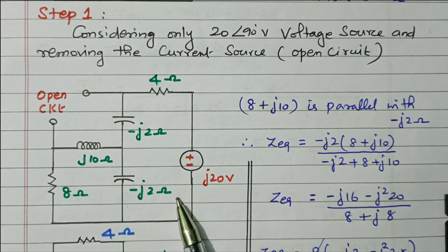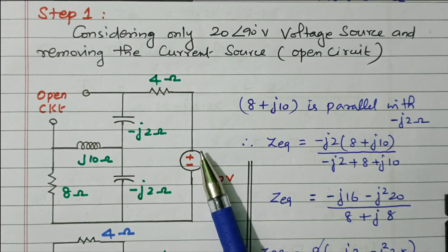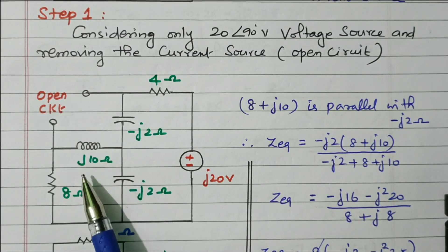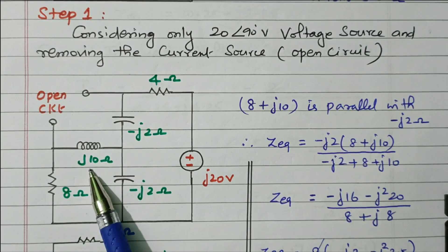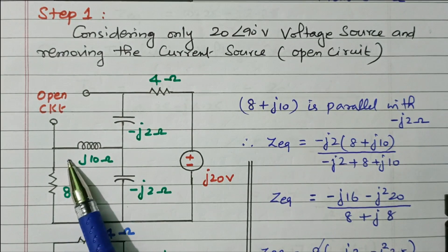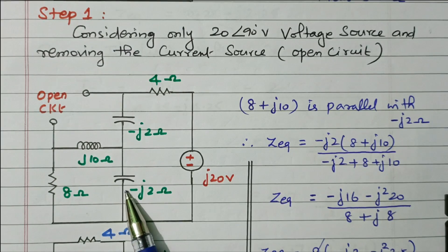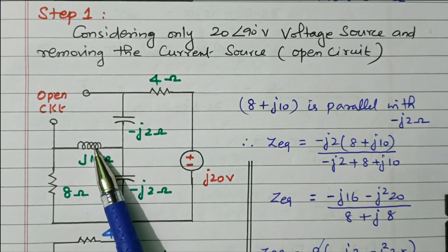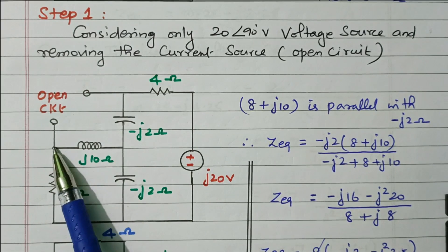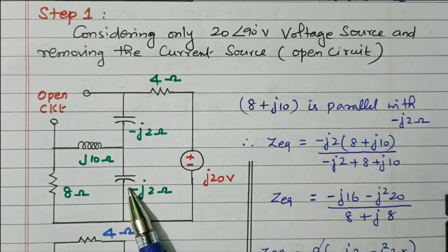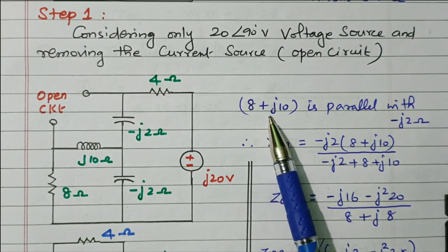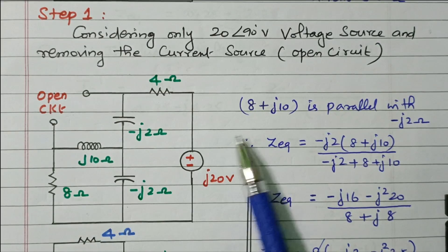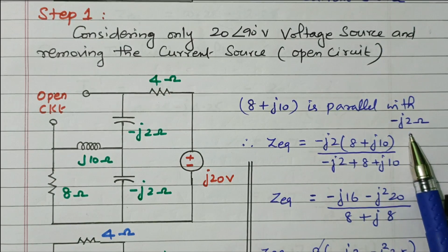By inspecting this circuit, we can see that the 8 ohm resistor and the j10 ohm inductor are connected in series, and that series combination is in parallel with the capacitor (−j2 ohm). So we can find the Z equivalent: (8 + j10) in parallel with (−j2), giving Z_eq = (−j2)(8 + j10) divided by (−j2 + 8 + j10).